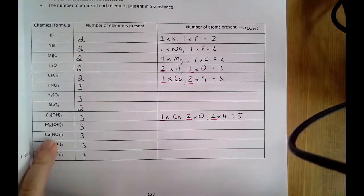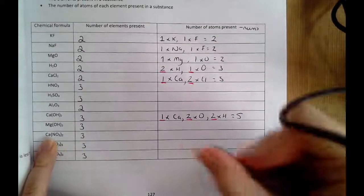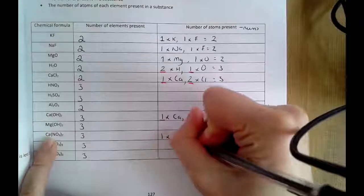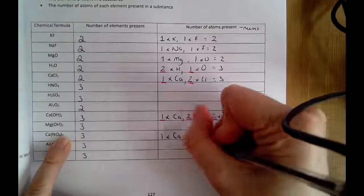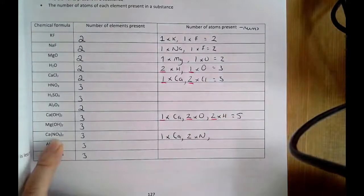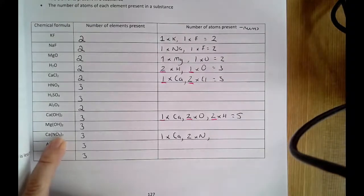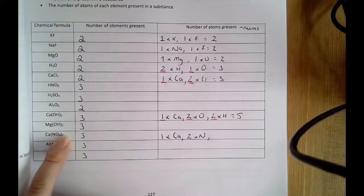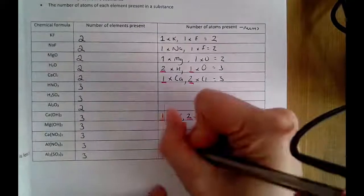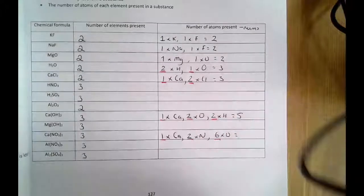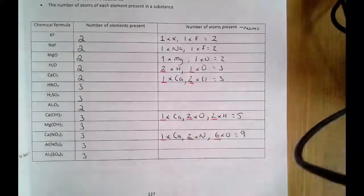For Ca(NO3)2: calcium is not inside the bracket, no number directly after it, so just one calcium. Nitrogen is in the bracket — one nitrogen in the bracket with a 2 outside means two nitrogens. With oxygen, there's a 3 inside the bracket and a 2 outside. Brackets mean multiply, so three times two gives six oxygens in total. So I've got one calcium, two nitrogens, six oxygens — adding all that up gives nine atoms in total.